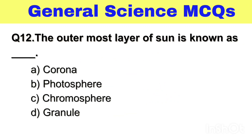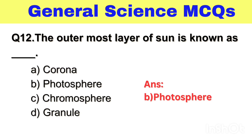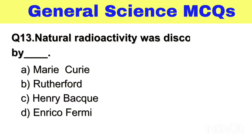Question No. 12. The outermost layer of the sun is known as — Option A. Corona, B. Photosphere, C. Chromosphere, D. Granuli. The right answer, Option B. Photosphere.